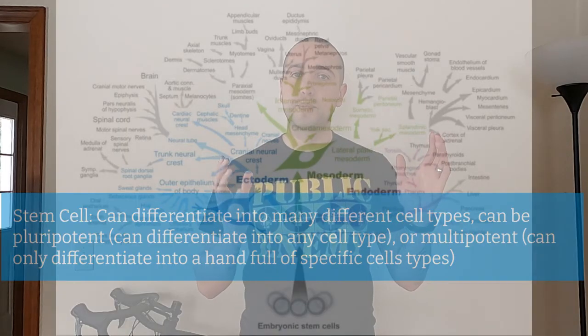Those different cell types all arose from things called stem cells. They're called stem cells because if you picture a tree, all of the cell types out here came from a stem. A stem cell can copy itself and make another stem cell, but stem also means they could create any of the cell types.